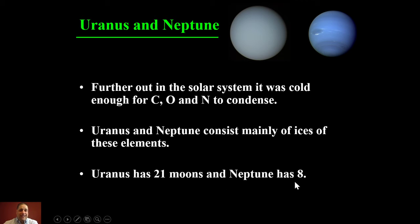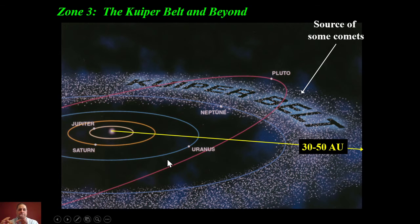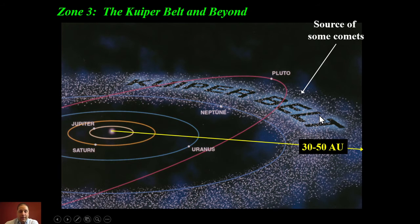Uranus has 21 moons and Neptune has 8 moons. Both have relatively circular orbits like the rest of the planets. Here is a picture of the outer solar system — further out — and here we have Pluto and its orbit. Pluto was an oddball planet for a long time because of its tilted and very elliptical orbit. In fact, sometimes Pluto is actually closer to the Sun than Neptune, passing between the orbits of Neptune and Uranus, making it an unusual object.